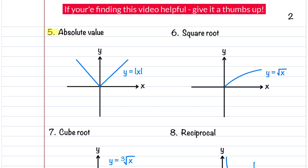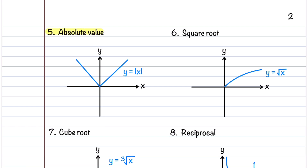The fifth parent function is the absolute value function, described by the equation y = |x|. It's a V-shaped graph with the vertex located at the origin. It's an even function, making it symmetric about the y-axis, and it's defined for all values of x.